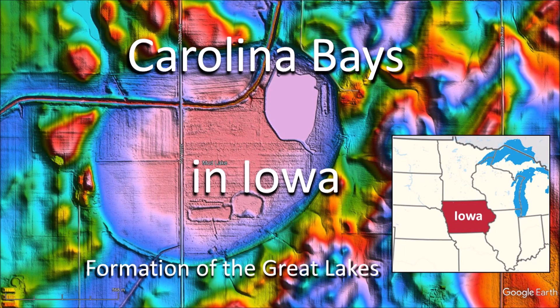Welcome to another edition of the Carolina Bay of the Day, where we study the secondary impacts made by the glacier ice boulders that were ejected by one or more extraterrestrial impacts on the Laurentide Ice Sheet. This presentation discusses the Carolina Bays in Iowa and what their orientations toward Lake Superior imply about the formation of the Great Lakes.